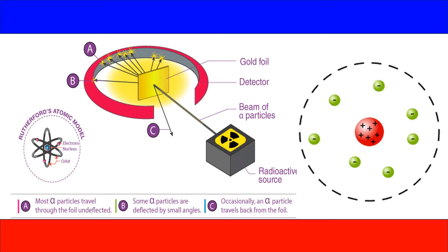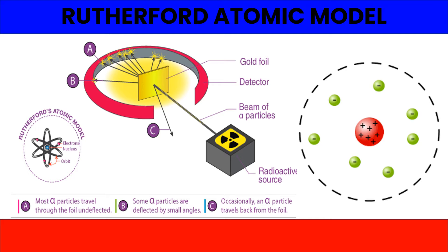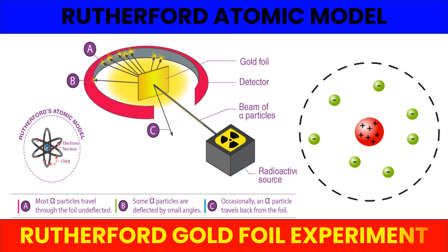In this lecture we are going to discuss the Rutherford atomic model. We will explain how Rutherford, with the gold foil experiment, proposed his atomic model. According to Rutherford, an atom is based on a center, and the center of an atom is known as the nucleus. Electrons are present around the nucleus but they are not part of the nucleus.